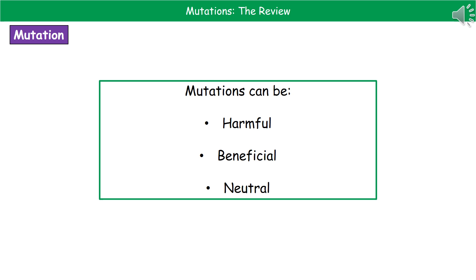Mutations fall into three categories: harmful mutations, beneficial mutations, and ones we refer to as neutral mutations — those that have neither harm nor benefit.